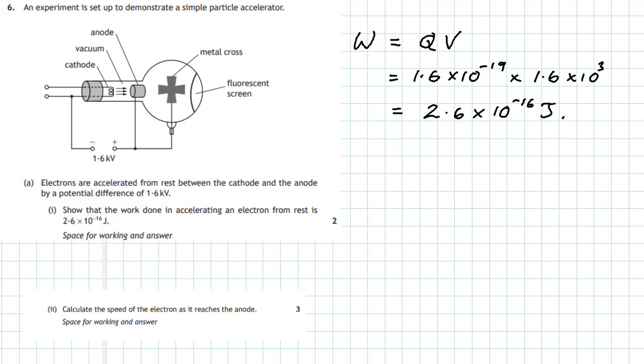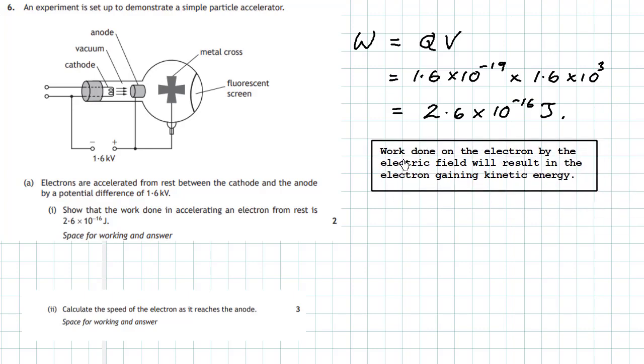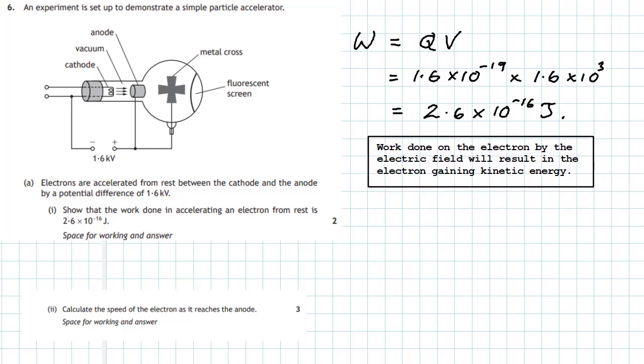Question 6 part 2. Calculate the speed of the electron as it reaches the anode. The important fact to note here is that the work done on the electron by the electric field will result in the electron gaining kinetic energy. So if the work done is 2.6 times 10 to the minus 16 joules, that will be the value of the kinetic energy once it reaches the anode.